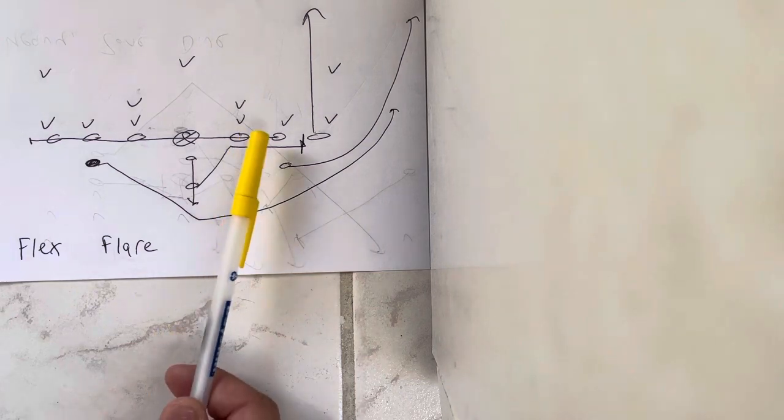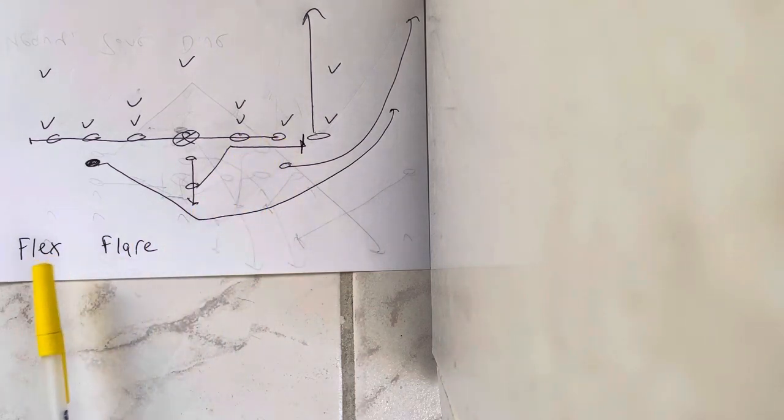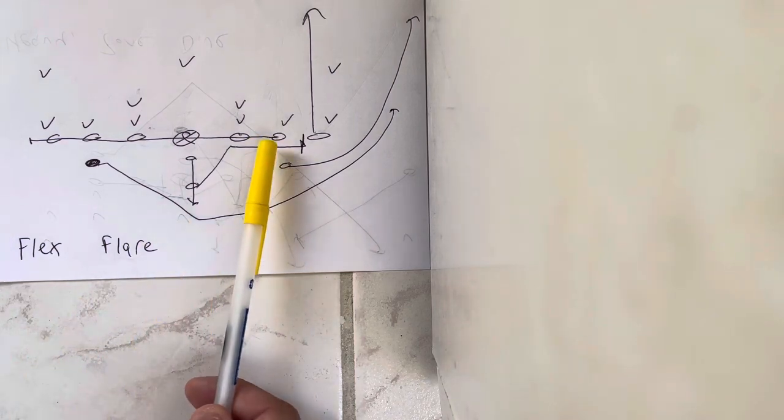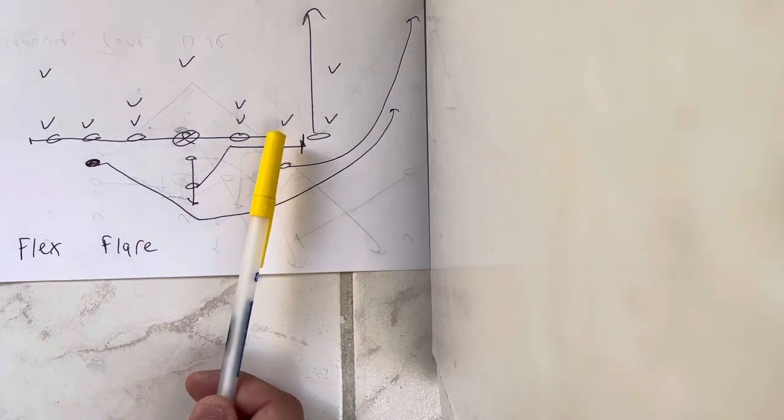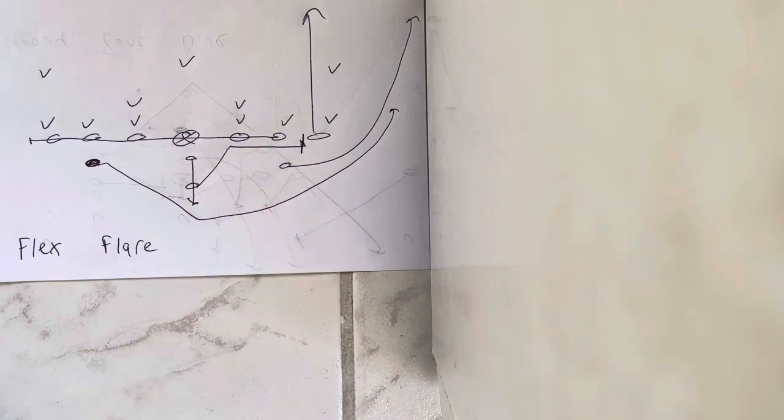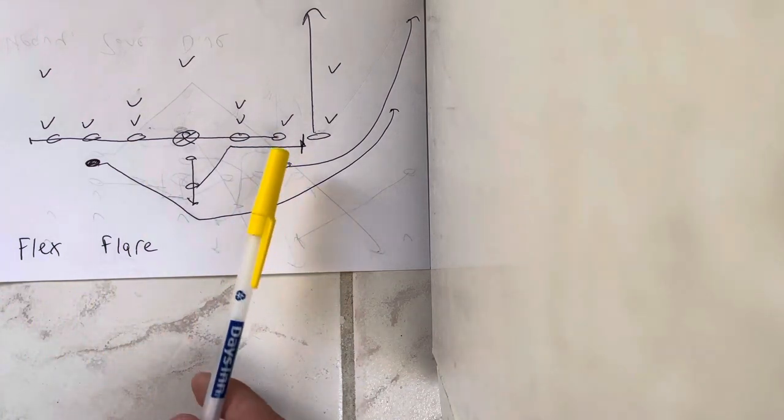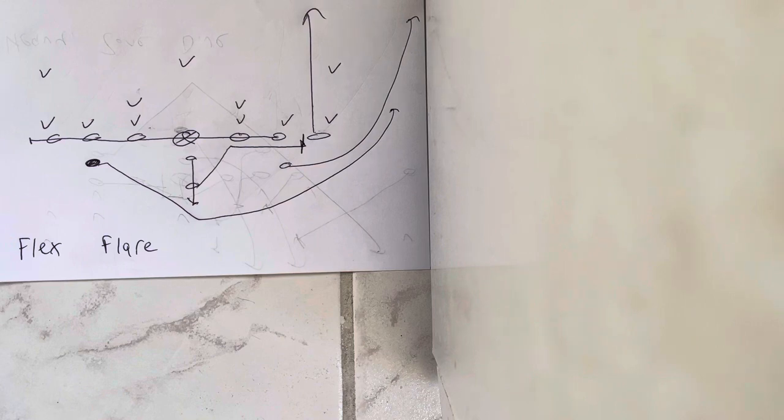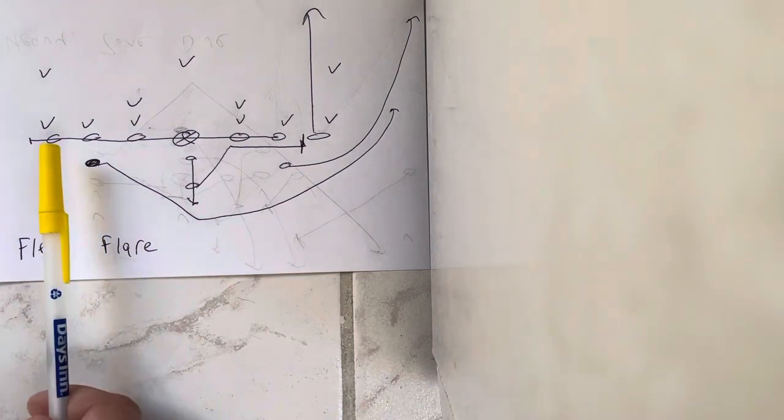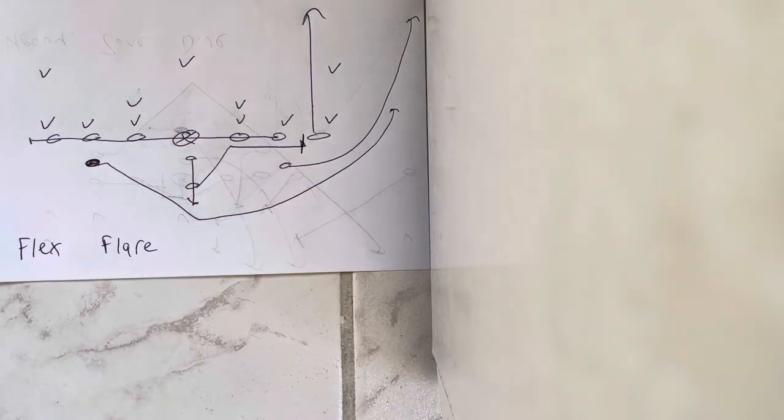So what's going to happen is everybody from the, so if you call double flex triple pass flare right, everybody from the tackle, the call side tackle back is going to slide away from the call. They're going to take two steps to the left, block whoever shows the adjacent gap, and if nobody shows, keep sliding until there is.